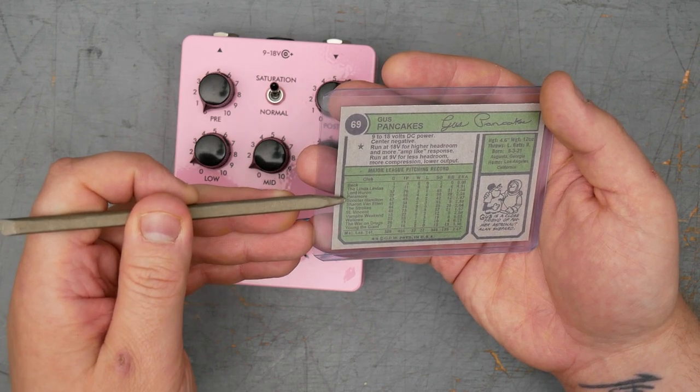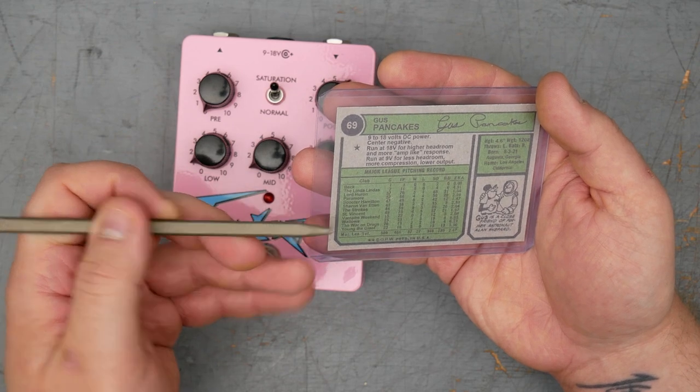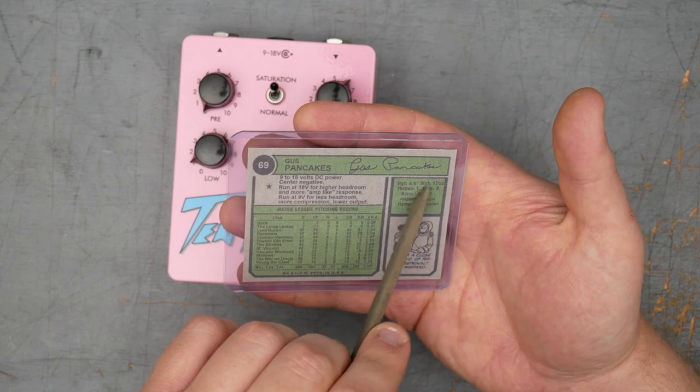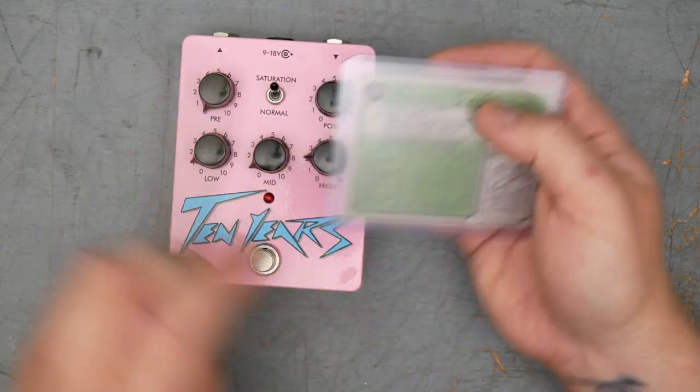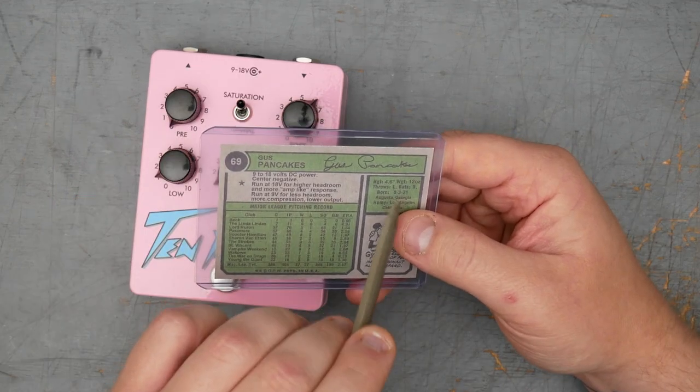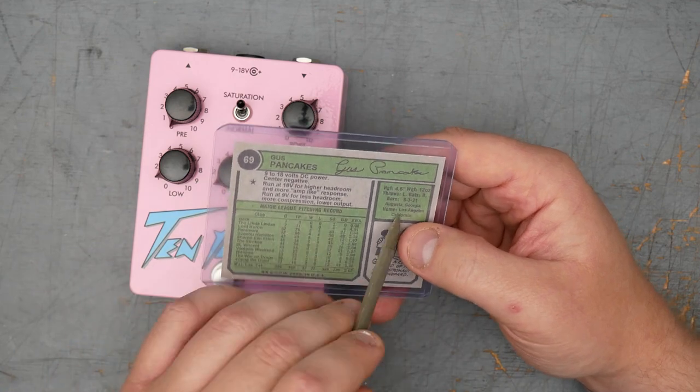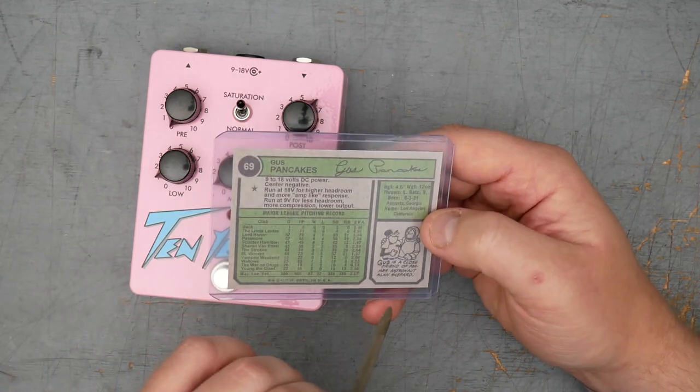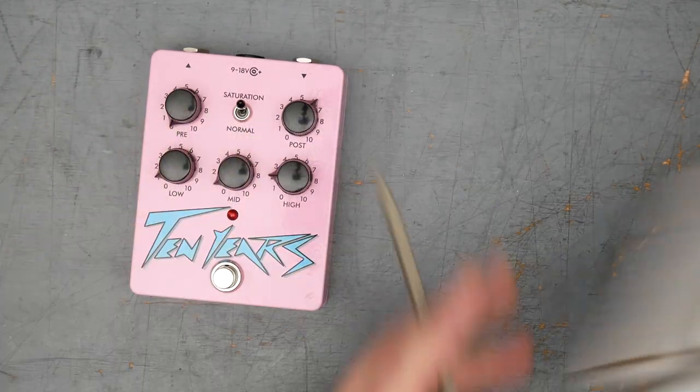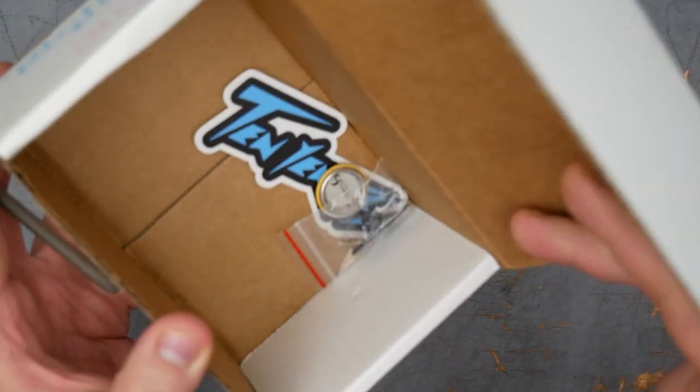St. Vincent's there, Paramore, Beck, Young the Giant, War on Drugs, Vampire Weekend. There's some names there. It gives some specs about the pedal: Height 4.6 inches, that's the length of the enclosure. Born 2021, August 3rd, 2021, so presumably when they put out the pedal. Los Angeles, California. And there's Gus Pancakes, that's the person that actually makes the pedal. There's also some other goodies in the box, like some stickers and pins and whatnot.